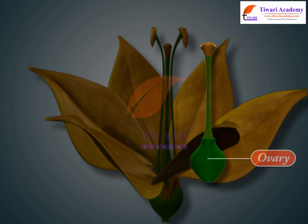Ovule is a small structure attached to the placenta. Funicle is the stalk by which the ovule is attached to the placenta. Hilum is the junction between the ovule and the funicle. Integuments are the protective envelopes. Micropile is the small opening at the tip of the ovule into which the pollen tube enters. Chalaza is the basal part of the ovule. Nucellus (2N) is the mass of cells enclosed in the integuments, and has abundant food reserve.